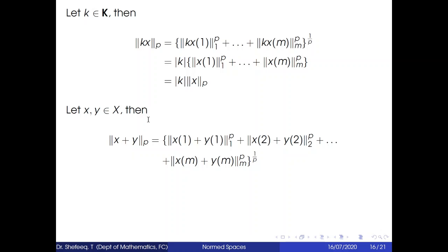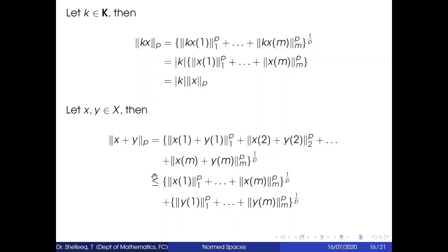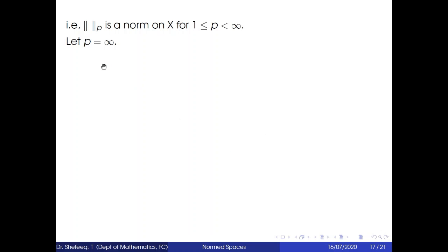For the triangle inequality, let x, y belong to X. Then ‖x + y‖_p by definition equals (‖(x+y)_1‖_1^p + … + ‖(x+y)_M‖_M^p)^{1/p}. Using the triangle inequality for each ‖·‖_j and the Minkowski inequality, this is less than or equal to (‖x_1‖_1^p + … + ‖x_M‖_M^p)^{1/p} + (‖y_1‖_1^p + … + ‖y_M‖_M^p)^{1/p} = ‖x‖_p + ‖y‖_p. From all these conditions, ‖·‖_p is a norm on X for 1 ≤ p < ∞.